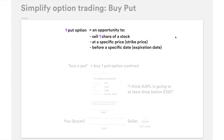Essentially, one put option means an opportunity to sell a share of a particular stock at a specific price — which we call the strike price — before a specific date, the expiration date. It might sound a little complicated because there are three things all baked into one concept, but it will make sense very soon.